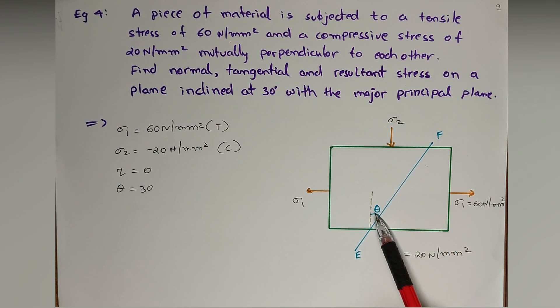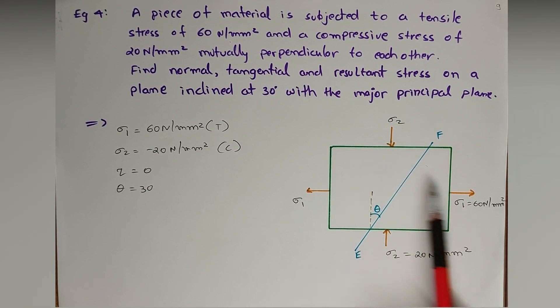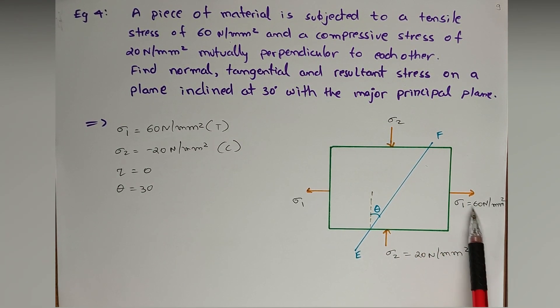So this is our plane, this is angle theta, this is our 30 degree inclined with this vertical plane which is acted by the sigma 1 major principal stress. The plane carrying maximum stress is known as the major principal stress or principal plane.